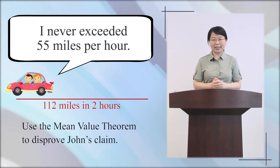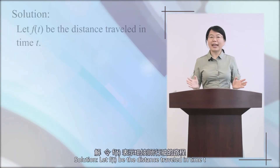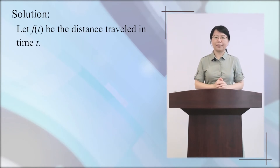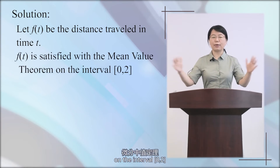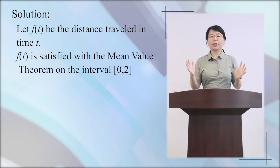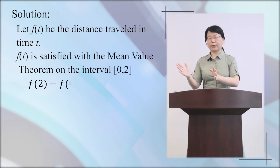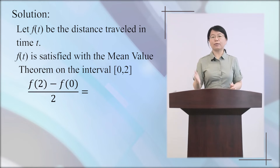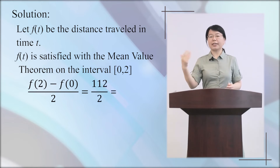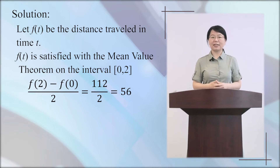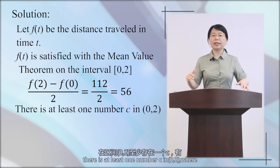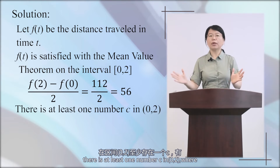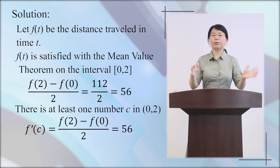Now let's do it together. Let f(t) be the distance traveled in time t. We see that f(t) satisfies the mean value theorem on the interval [0, 2]. Applying the mean value theorem, we have f(2) minus f(0) over 2, which equals 112 over 2, which equals 56. So according to the mean value theorem, there is at least one number c in the open interval (0, 2) where f prime of c equals 56.